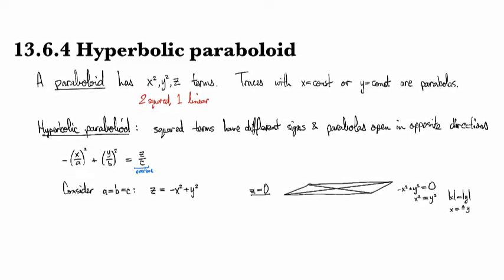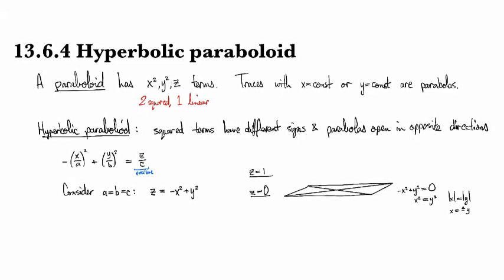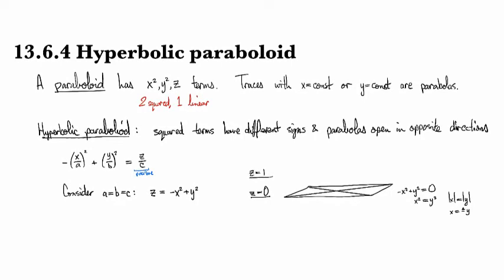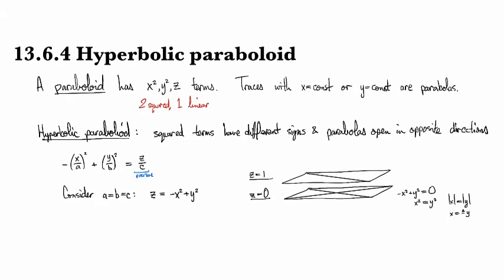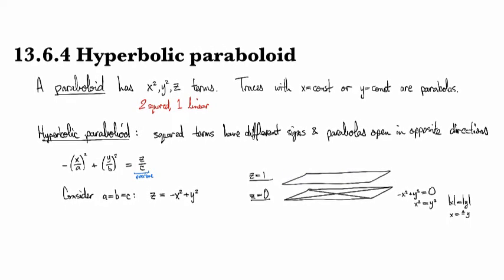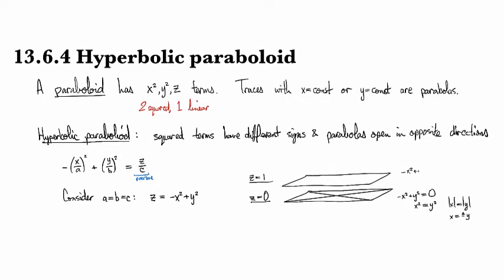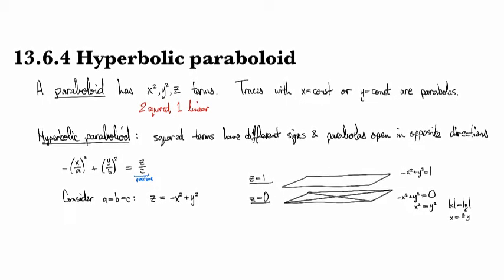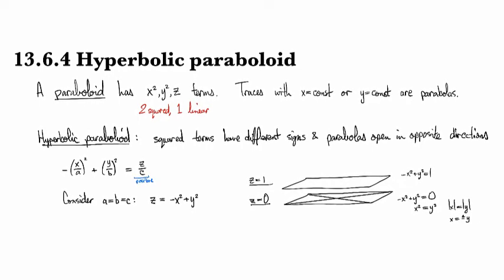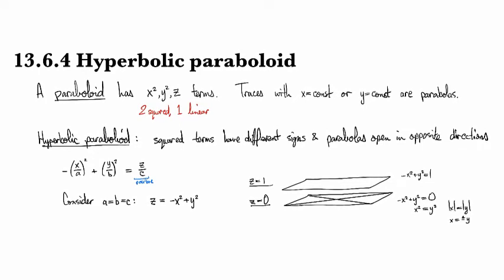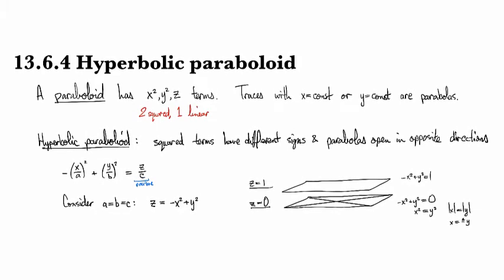So now if I go up to say z equals one, then I'm going to have minus x squared plus y squared equals one. And so this is going to be a hyperbola. How do I remember which way the hyperbola is going? Well, if I set y equal to zero, there's no solutions, right?